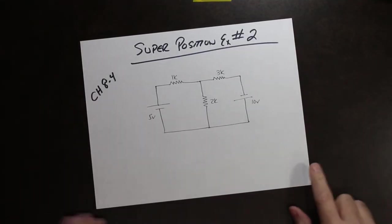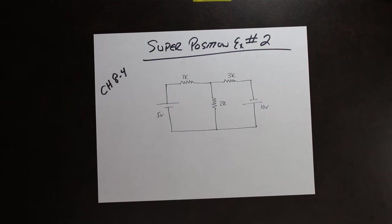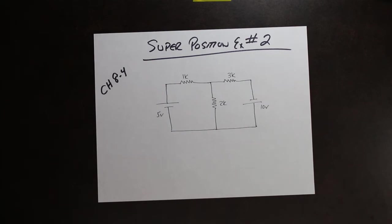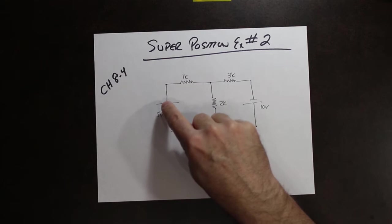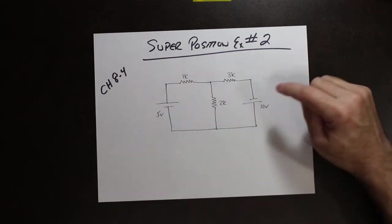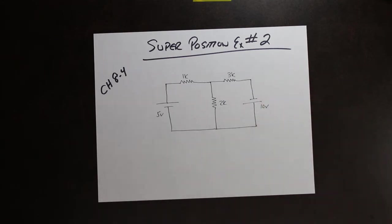Hey everybody, welcome back — Mr. G again. In this example for superposition theory, what I've done is very similar to the last example we did, but I have swapped the polarity of one of the supplies. So just to give you an idea of how this all works: we had in the previous case a 5-volt supply going this way and then a 10-volt supply going that way as well. Now I've swapped that supply over, and I just want to show you how it actually affects the circuit. The procedure and everything is exactly the same, and we'll walk through it step by step.